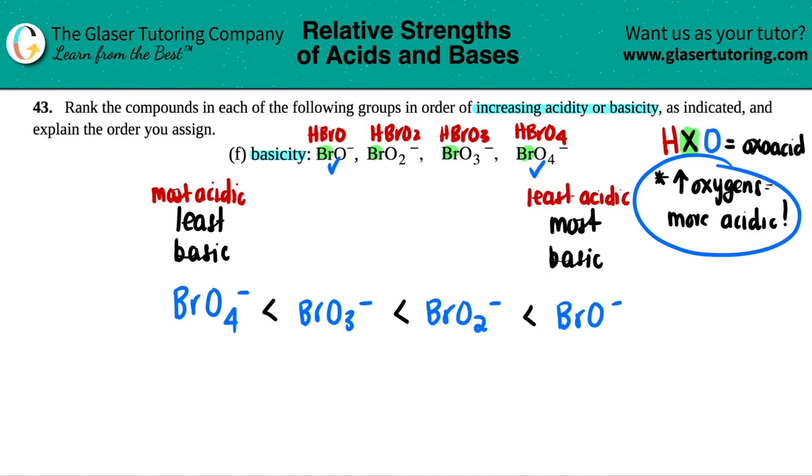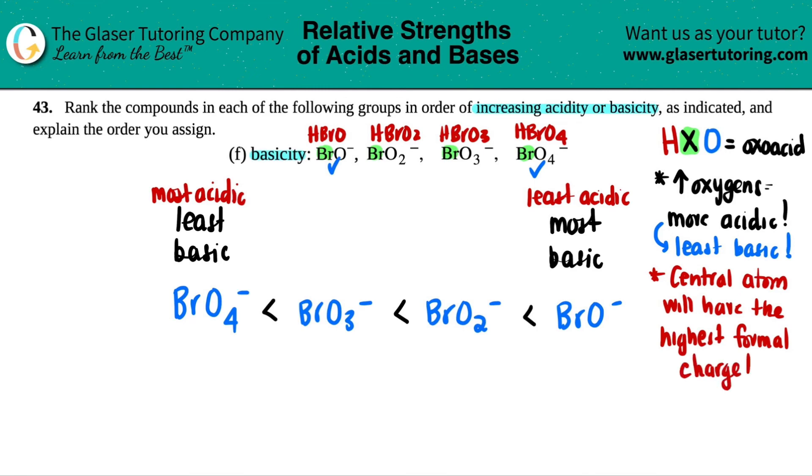And now we just have to explain why we chose this. Well, aside from the fact that the more oxygens, the more acidic, and that just translates to the least basic, that's because your central atom, when you have the higher number of oxygens, your central atom in this case, which is the bromine, your central atom will have the highest formal charge. And the number for formal charge is the same name as oxidation state. Those oxidation states, the charges. So the higher the formal charge, the better it is at becoming an acid.